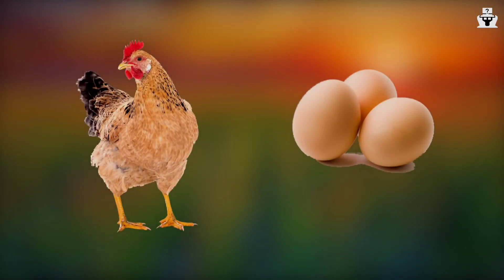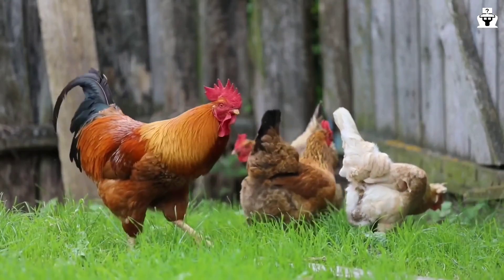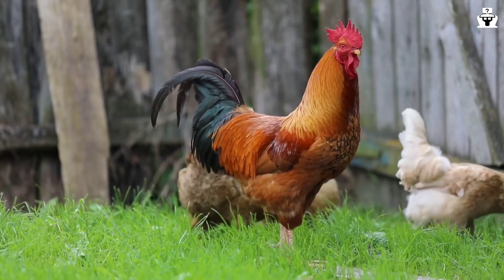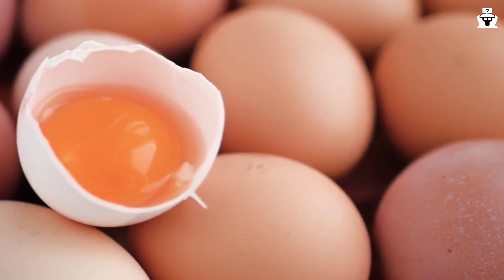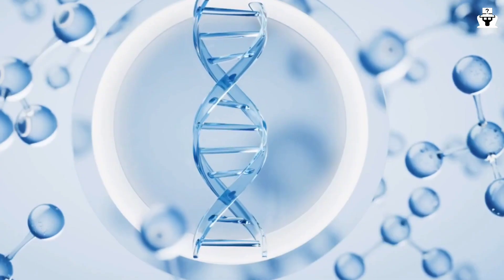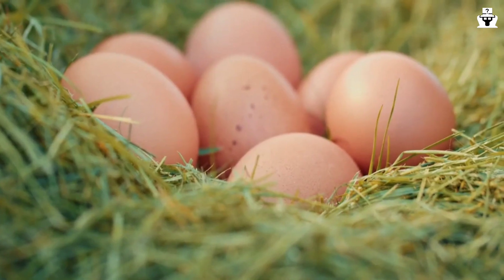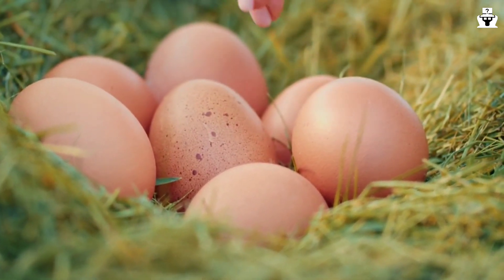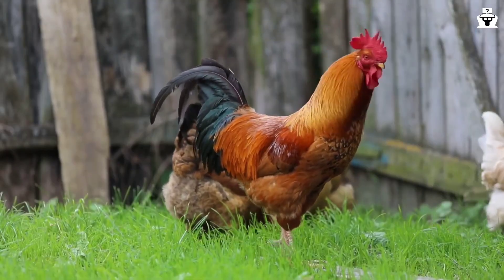The age-old question of whether the chicken or the egg came first is often debated. From a biological perspective, the answer lies in evolution. The egg, as we understand it, predates the existence of chickens. Organisms that laid eggs similar to what we would consider chicken eggs existed long before chickens themselves evolved. Over time, genetic variations and mutations occurred, leading to the emergence of what we now classify as chickens. Therefore, it can be argued that the egg came first, laid by a predecessor of the modern chicken, which eventually hatched into the first chicken.